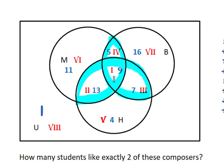But that would be counting region one, which is not actually students who like exactly two of the composers. They like at least two, but in fact, they like all three.